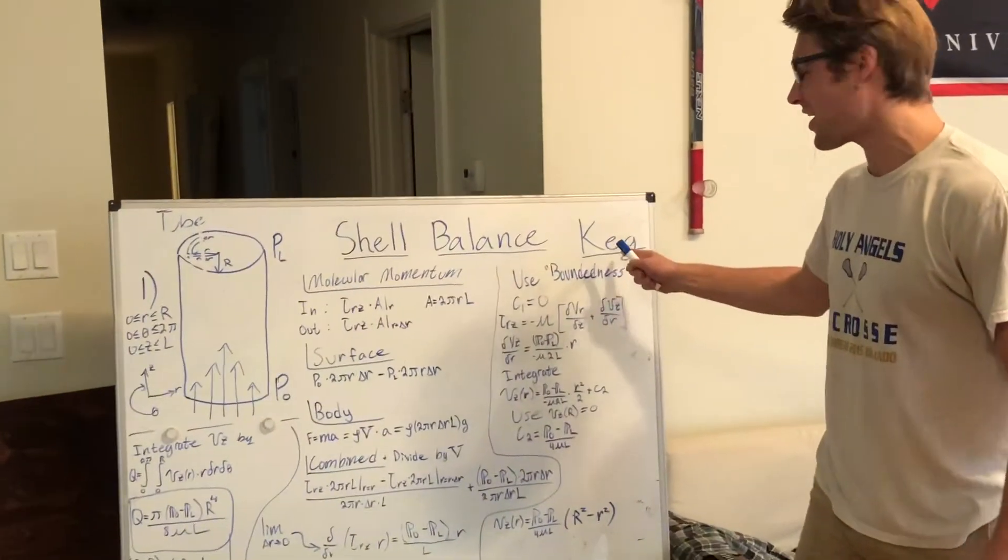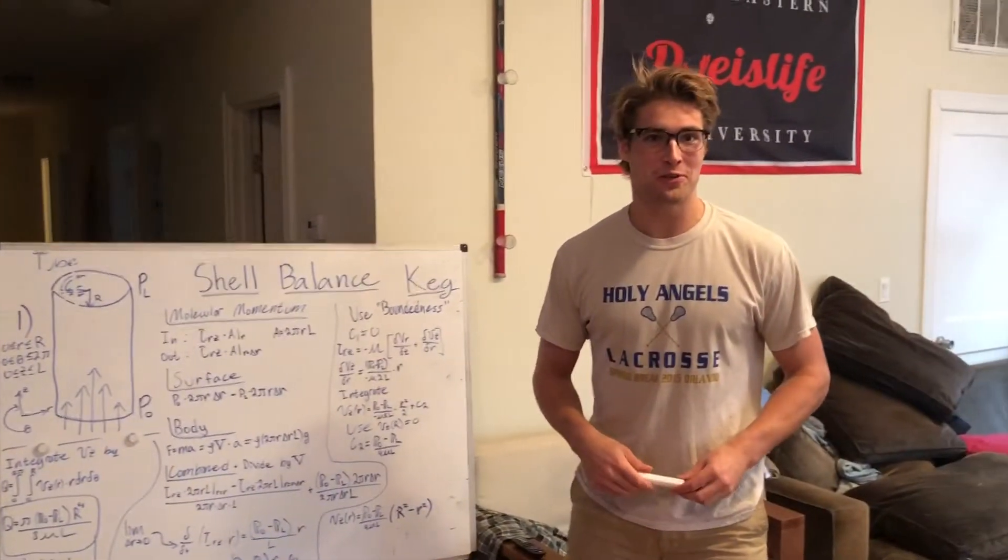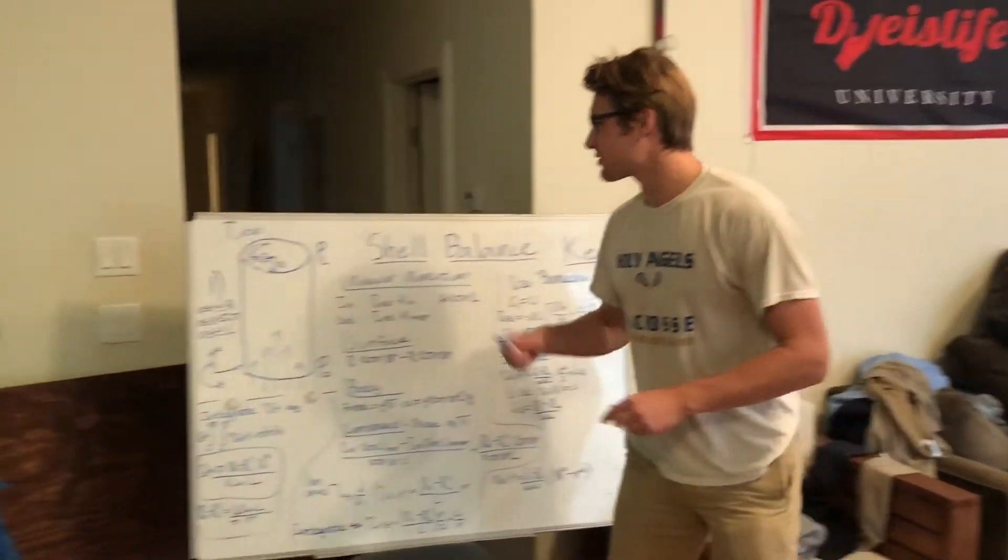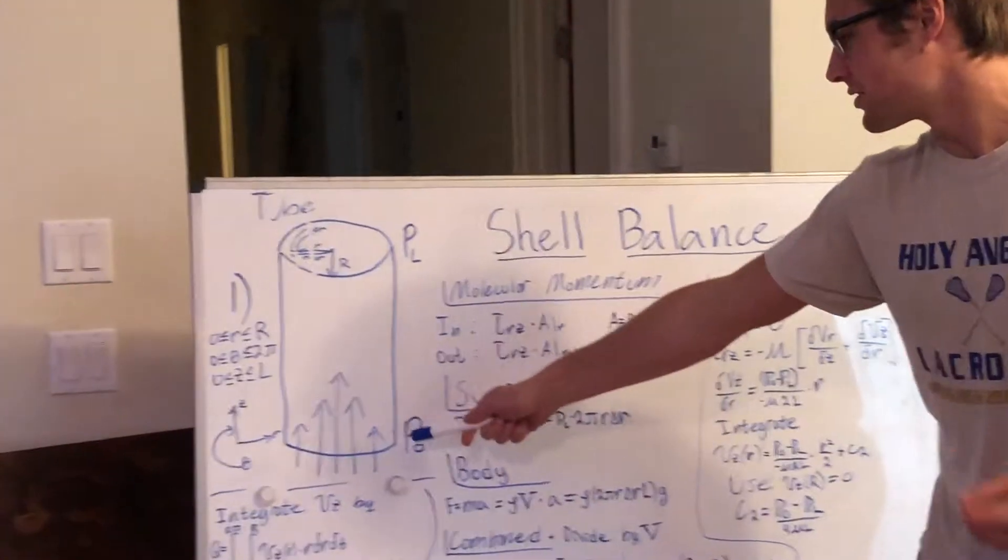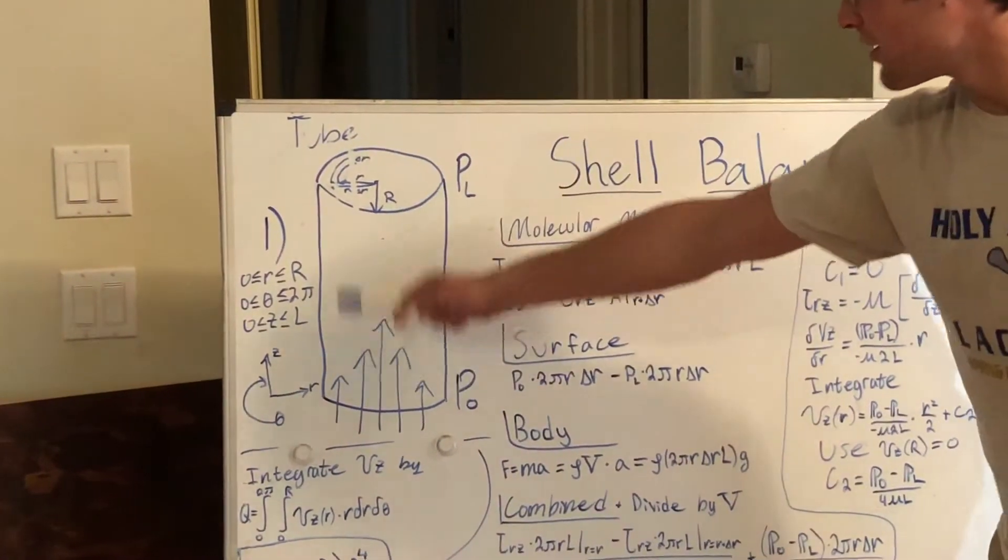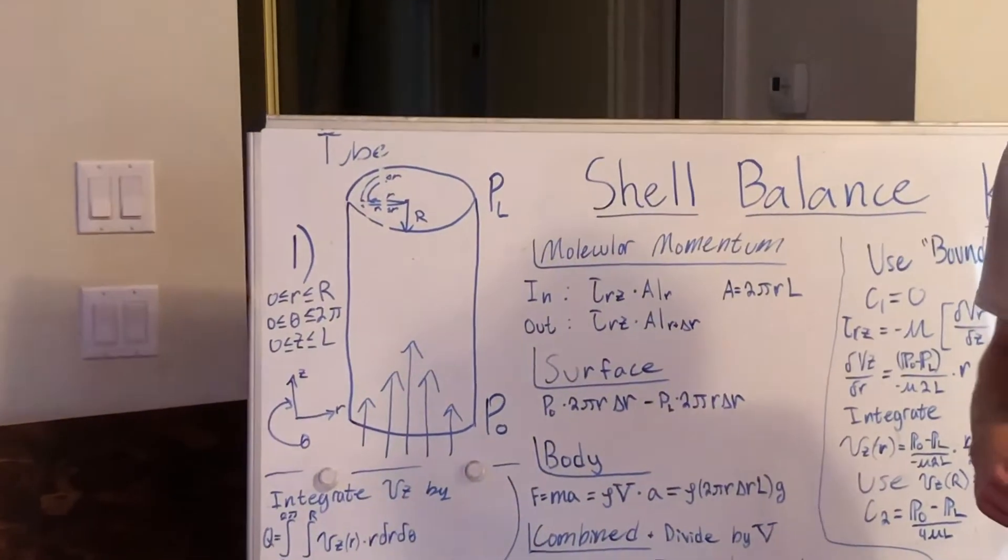We can set up a shell balance on our keg to describe the flow of the fluid through the tube. First of all, we've got to describe our system. So here we have the tube with flow through it. This is in the coordinate system of r, theta, and z as a cylindrical system.